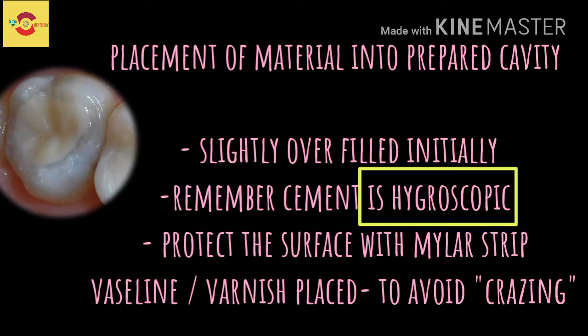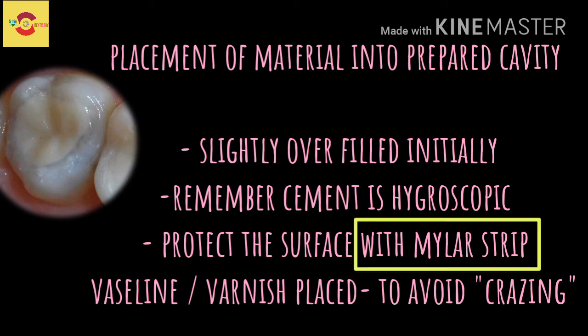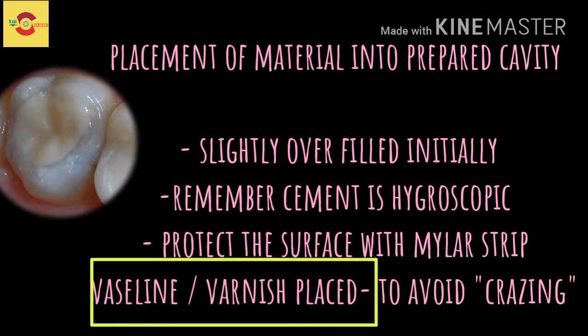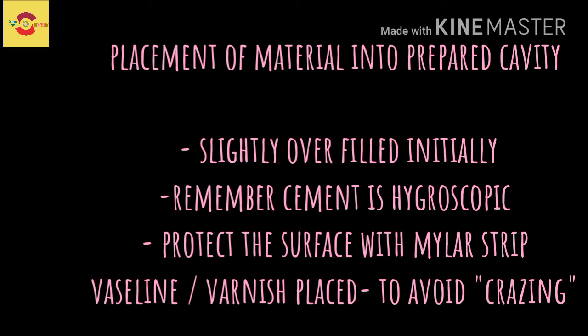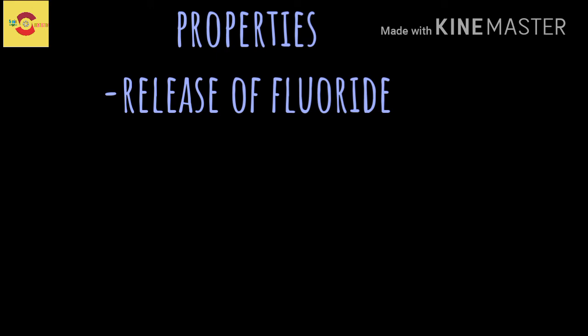The freshly placed GIC is hygroscopic in nature; therefore it is protected by a plastic mylar strip matrix for about five minutes. After removal of the strip, petroleum jelly, Vaseline, or varnish is placed over it to protect the material surface from moisture contamination during the setting phase.